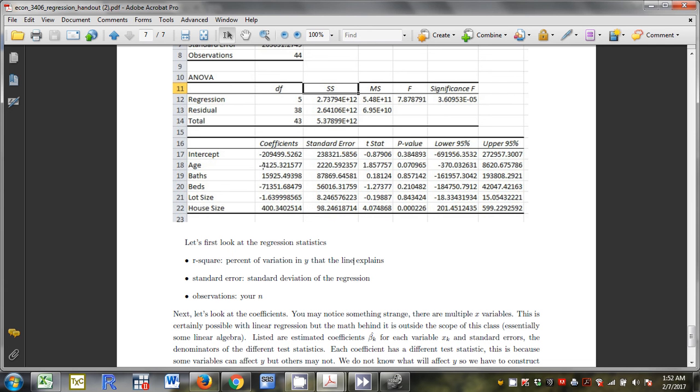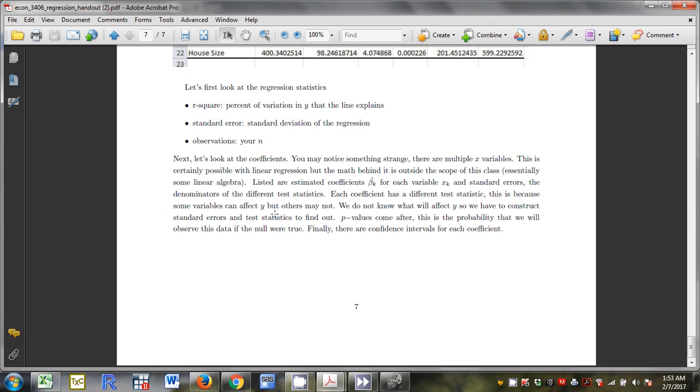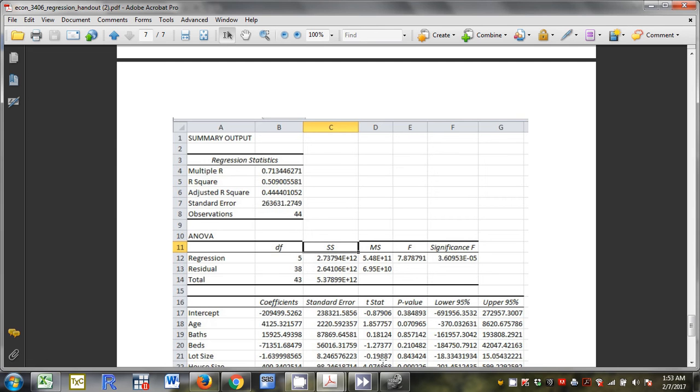So as the house gets one year older, $4,125 is added to the sale price. If we put a bathroom in, it's worth $15,925. Bedrooms, we subtract. Lot size, we subtract. House size, we don't. So some of these are not very intuitive. There are multiple X variables. This is possible. The math is outside of this class, but it's possible. So I've estimated the relationship between each of these variables and Y at the same time. So what I've done is try to control for some of the things that could influence Y.